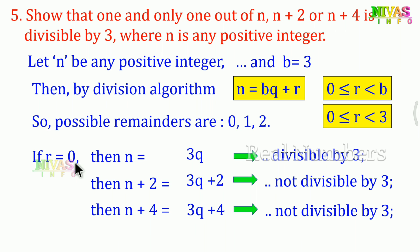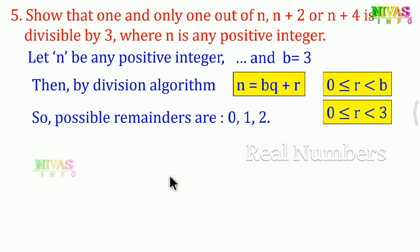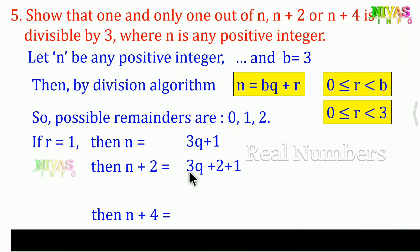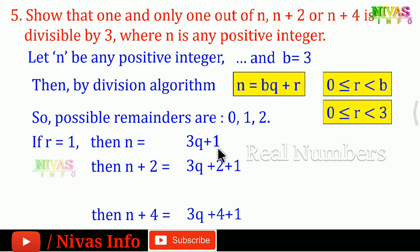Second case: If remainder is 1, then n = 3q + 1. For n: n = 3q + 1 is not divisible by 3. For n+2: n+2 = 3q + 1 + 2 = 3q + 3, which equals 3(q+1).